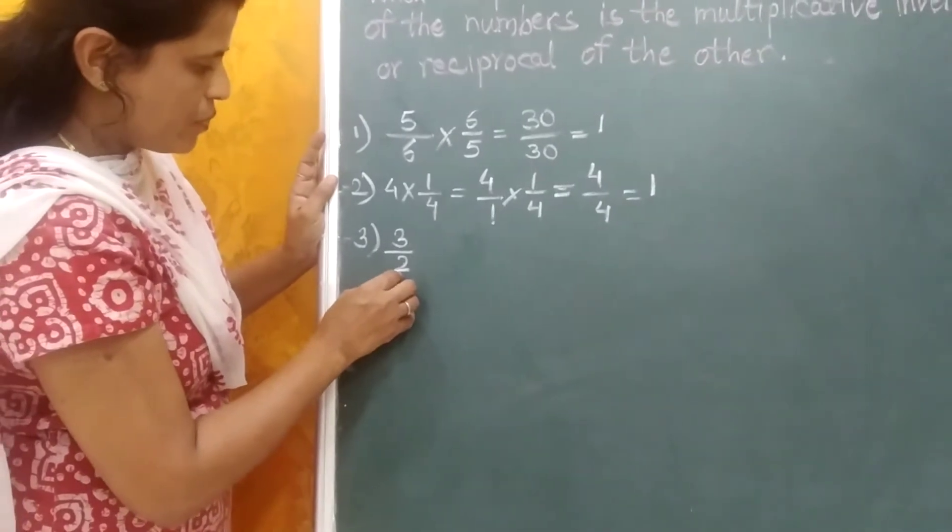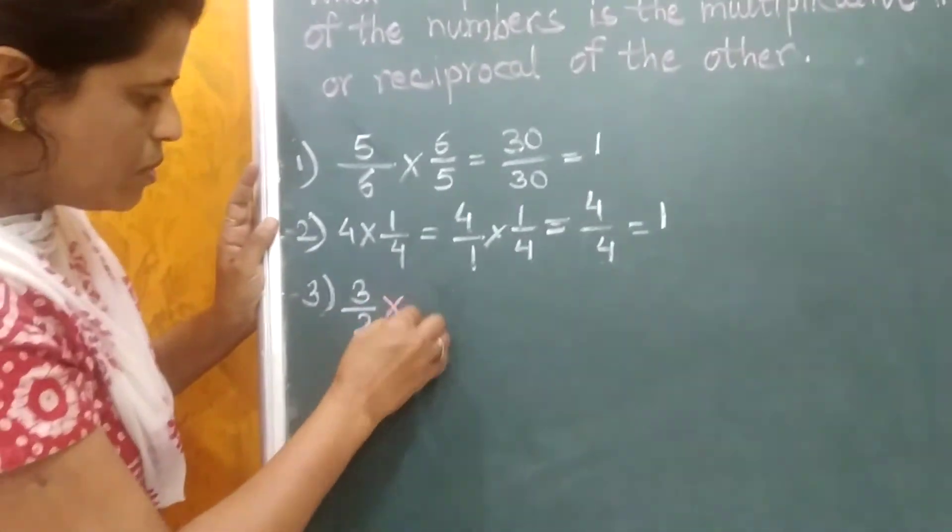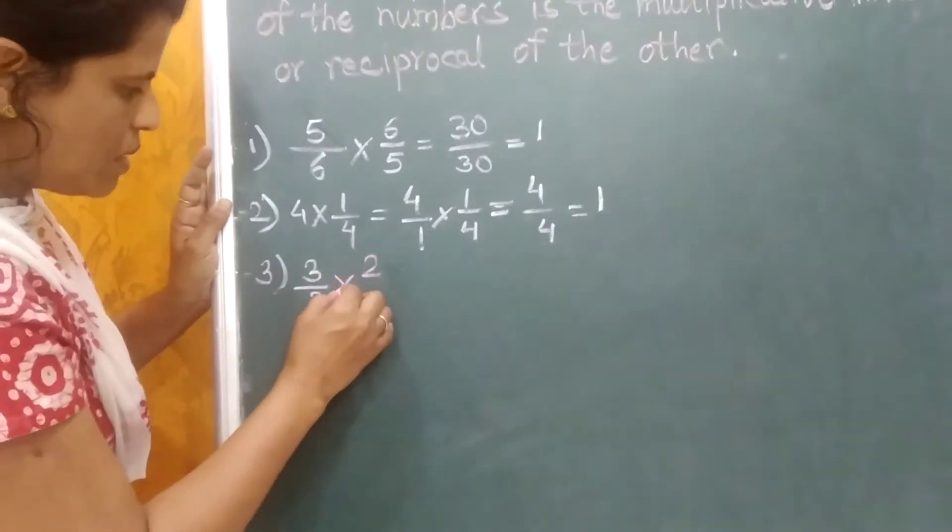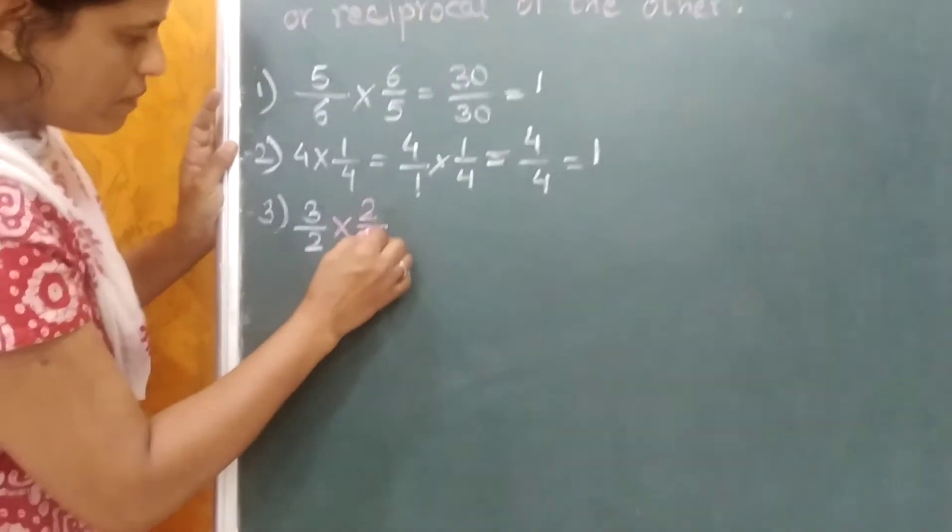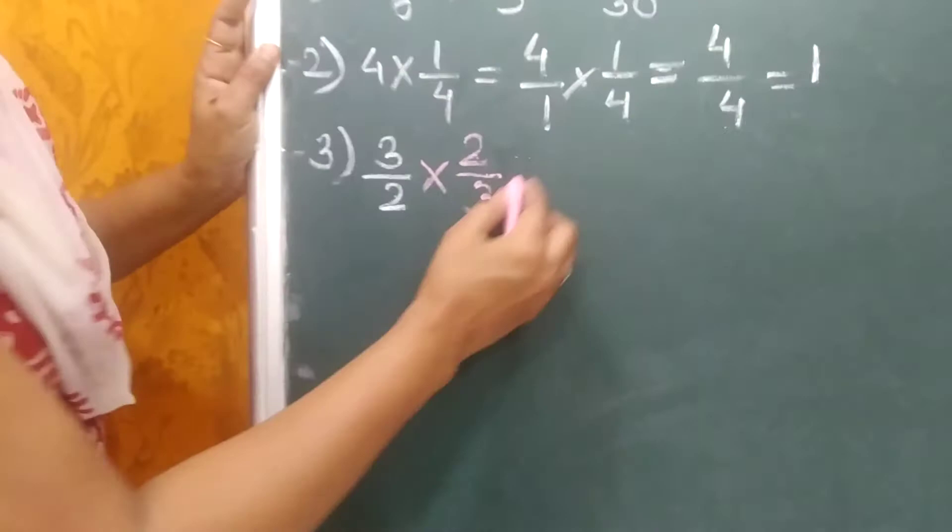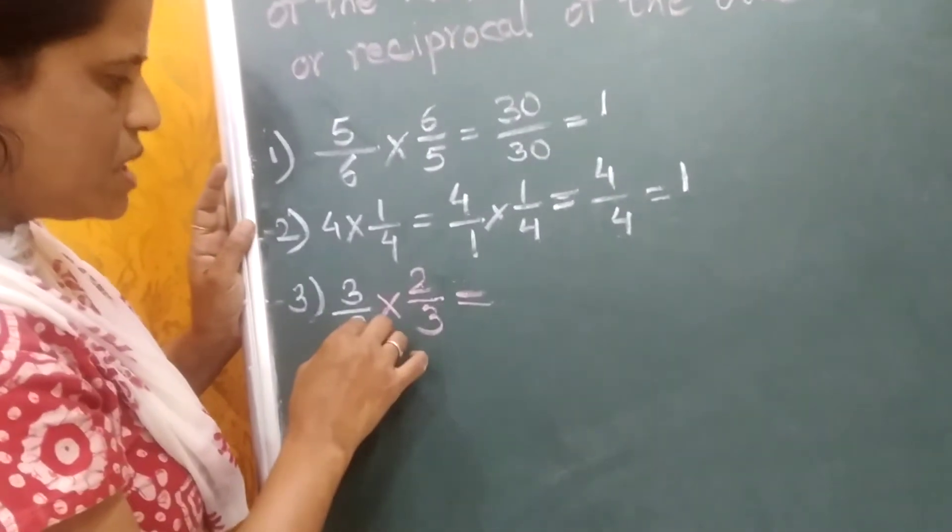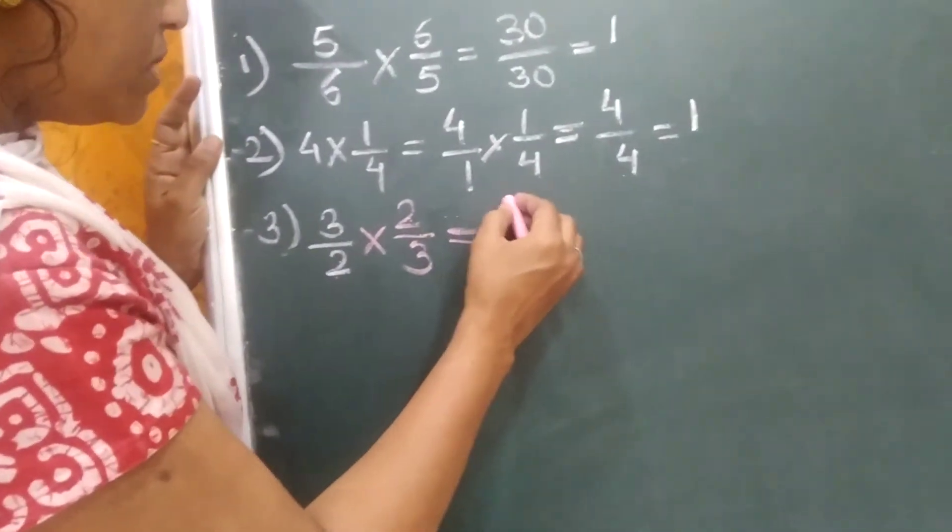3 upon 2 means it will be multiplied by exchanging the numerator and denominator of the same number. Like this, 3 upon 2 multiplied by 2 upon 3. We exchange the numerator and denominator of the first fraction 3 upon 2 as 2 upon 3.